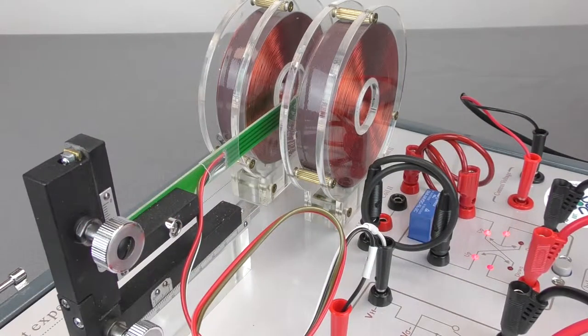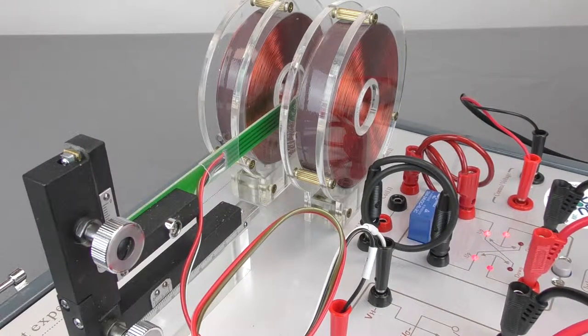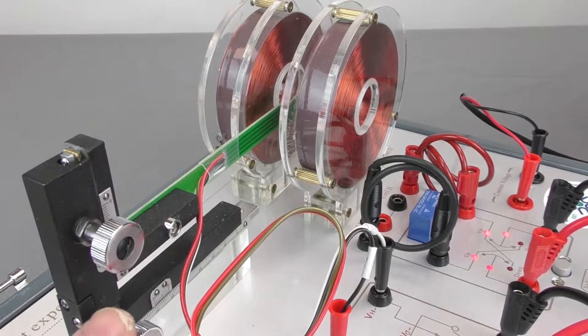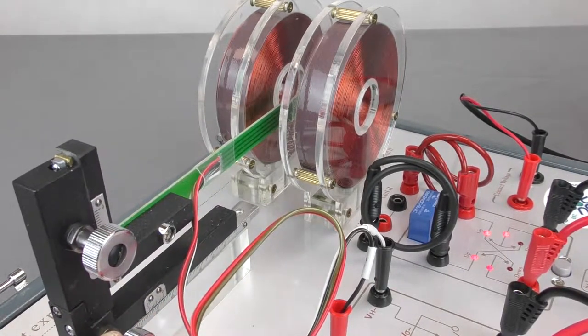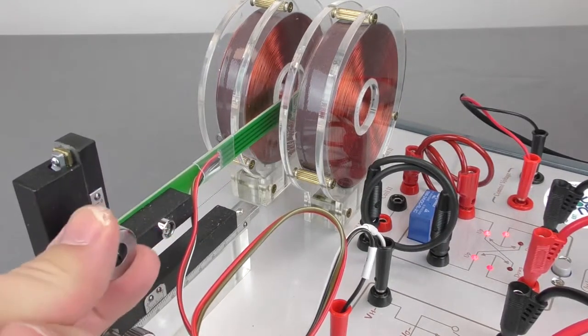Now that you have a technique for determining the Hall effect, you can explore the distribution of the magnetic field. This slide allows you to move it left and right, as well as up and down.